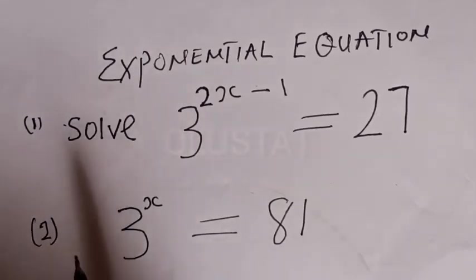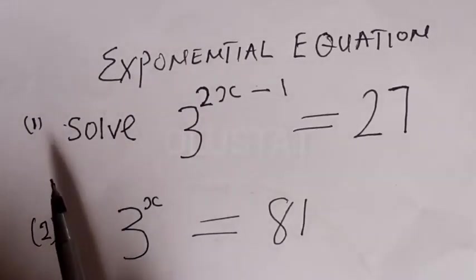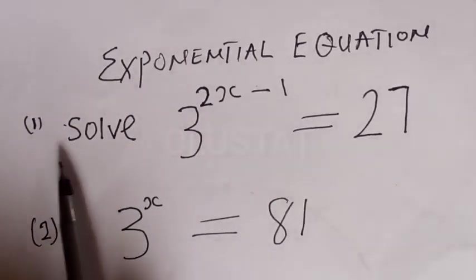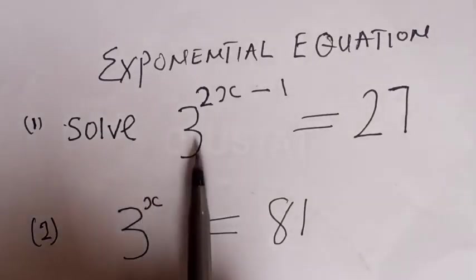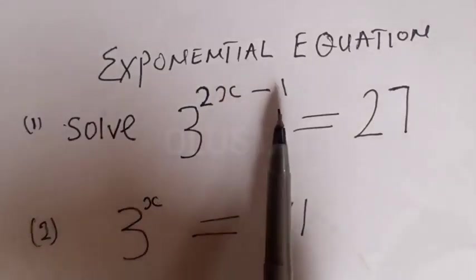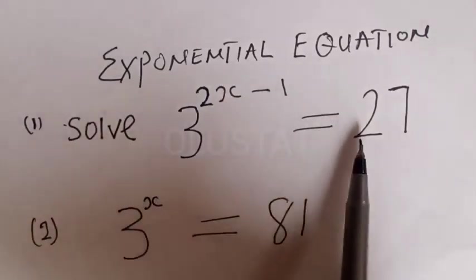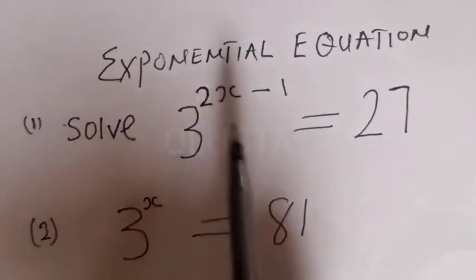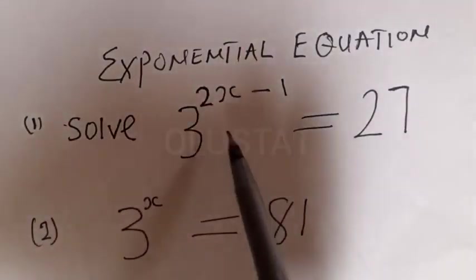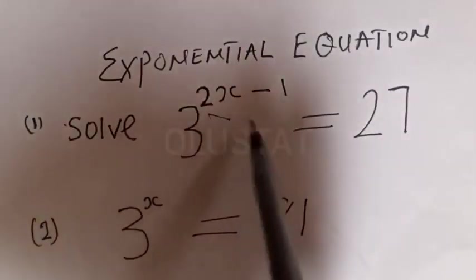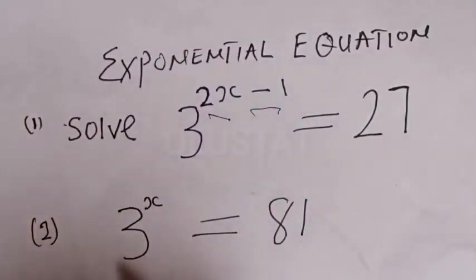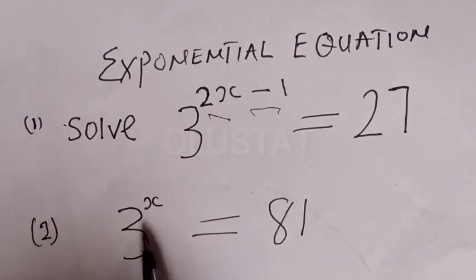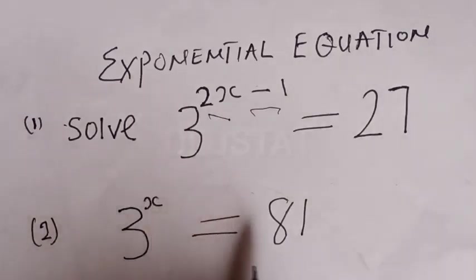Look at the first question. The first question says: solve 3 raised to power 2x minus 1, is equal to 27. This equation is written in exponential form. Then the second one says: 3 raised to power s is equal to 81.